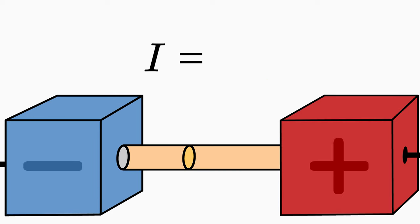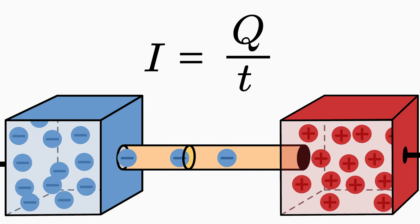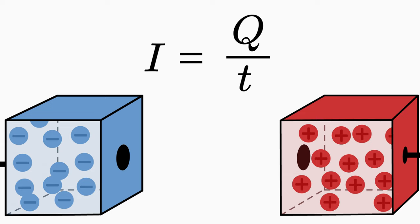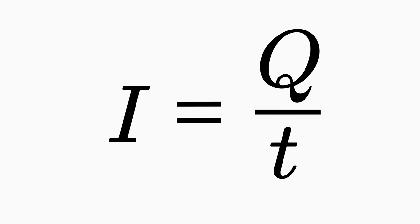So, to sum up, the electric current I is charge Q per time t. The current therefore tells us how much charge per second is transported through a cross-sectional area. In order for the current to be generated at all, charged particles must be set into directional motion. This directional motion occurs when positively and negatively charged particles are separated and then attract each other. The separation of charges is characterized by the so-called electric voltage. But this is a topic for another video. With this in mind, bye and see you next time.